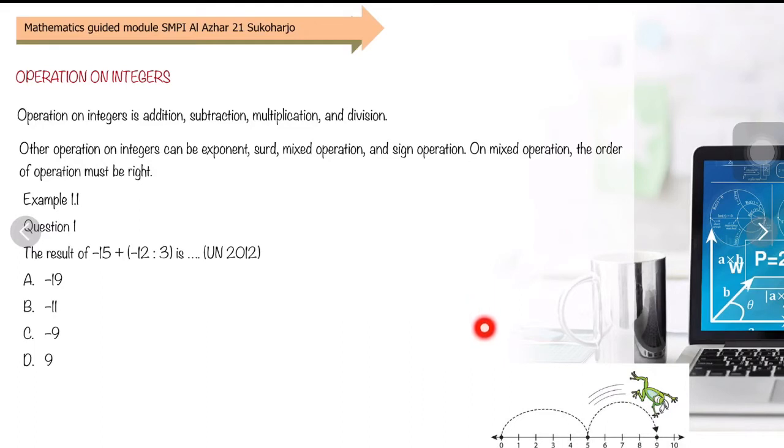Operation of integers includes addition, subtraction, multiplication, and division. To solve problems involving these four operations, we have rules: first, work on what's in the brackets, then continue with division and multiplication, then continue with addition and subtraction.